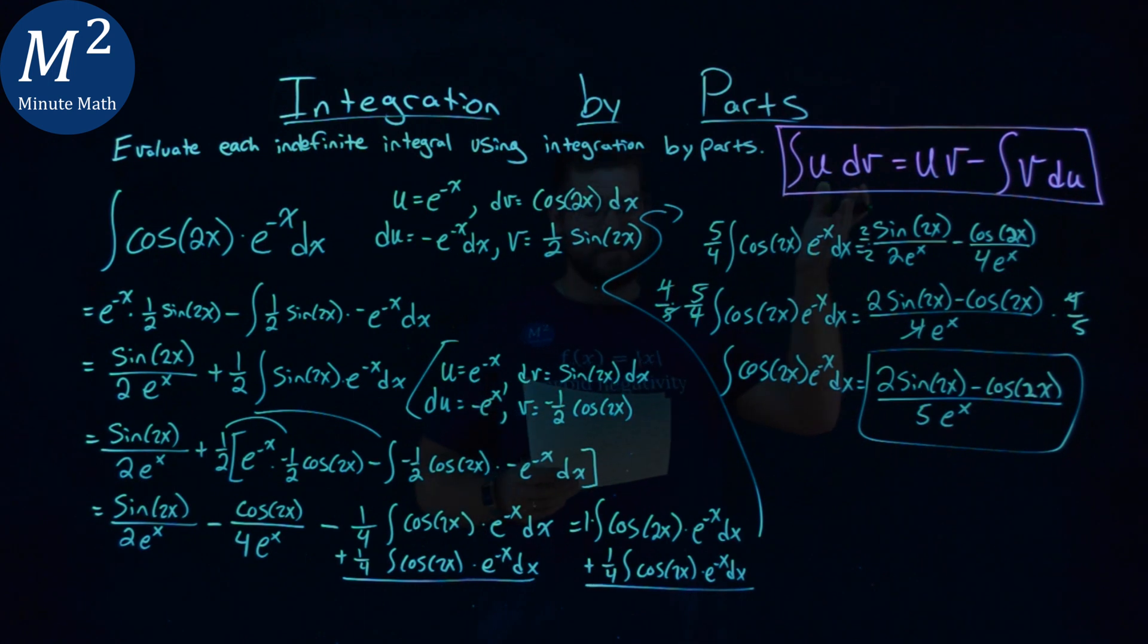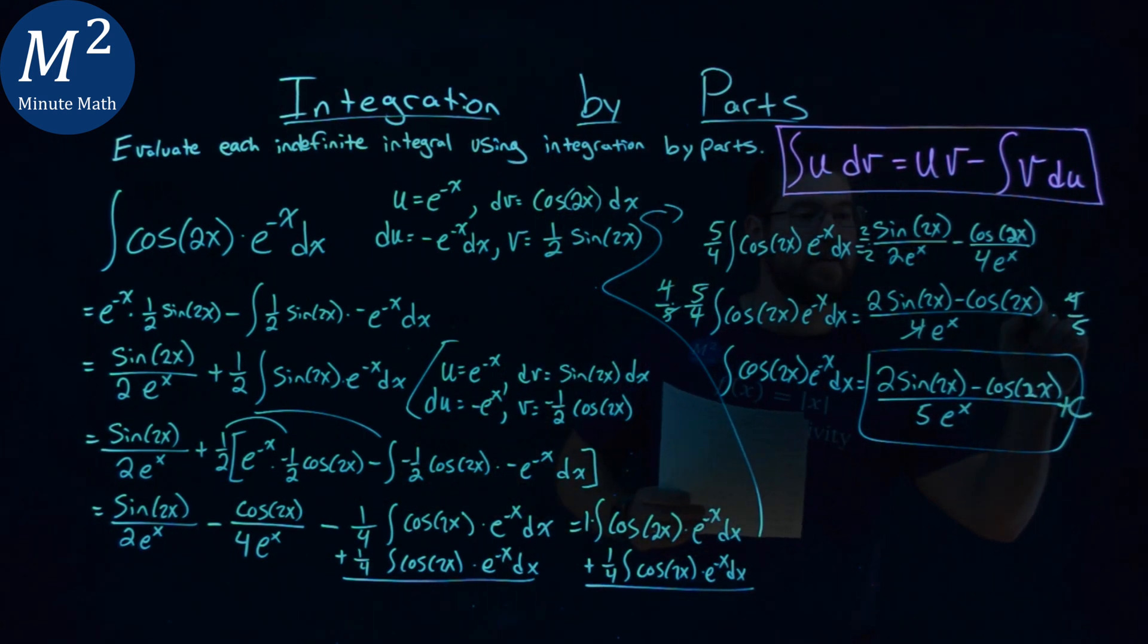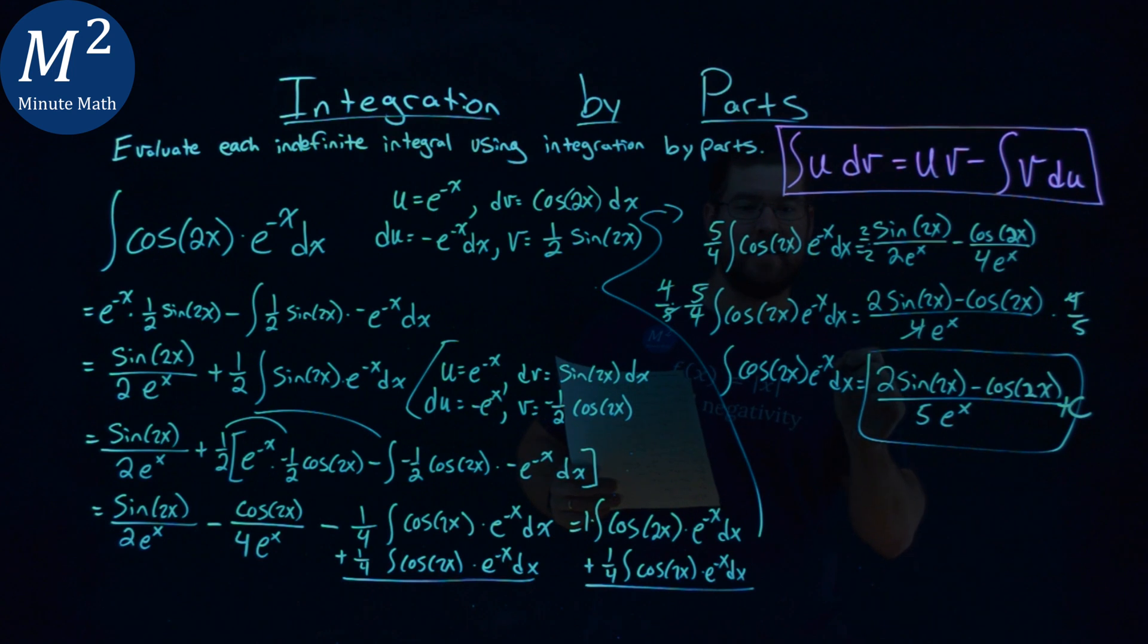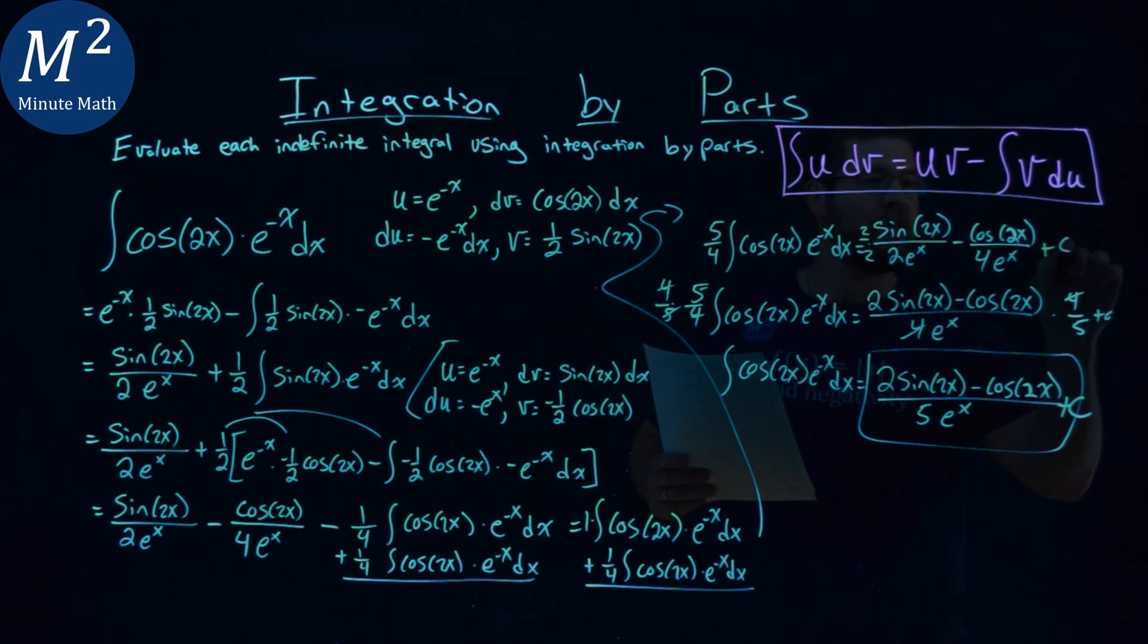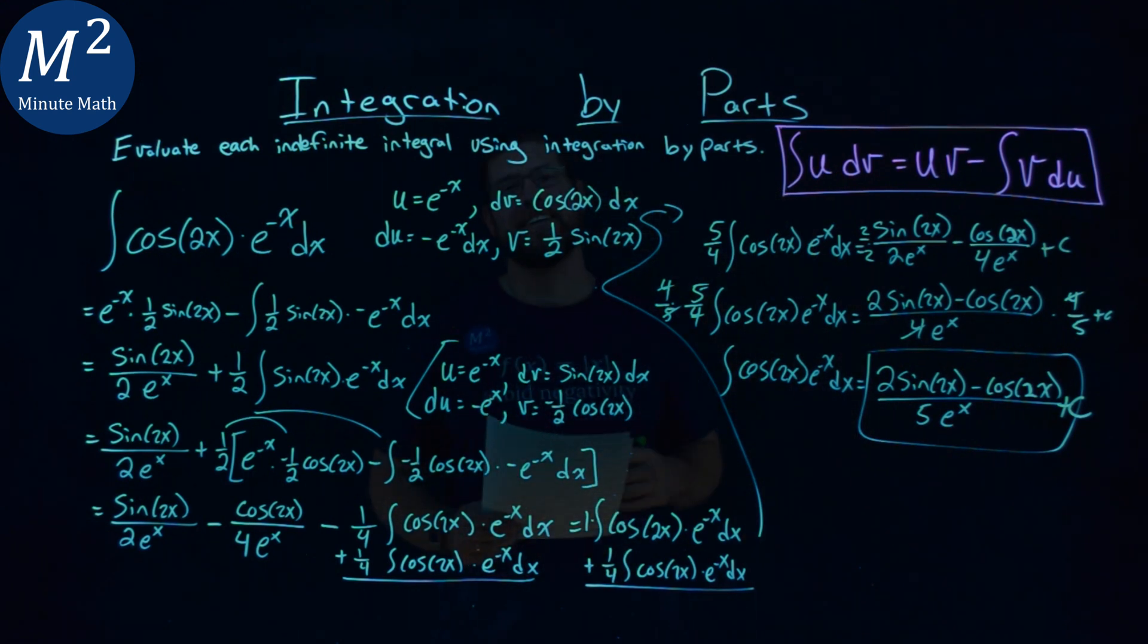Our final answer here is 2 times the sine of 2x minus cosine of 2x over 5 e to the x power. Oh, plus C. I almost forgot the plus C. Anyway, plus C at the end. That's our final answer.